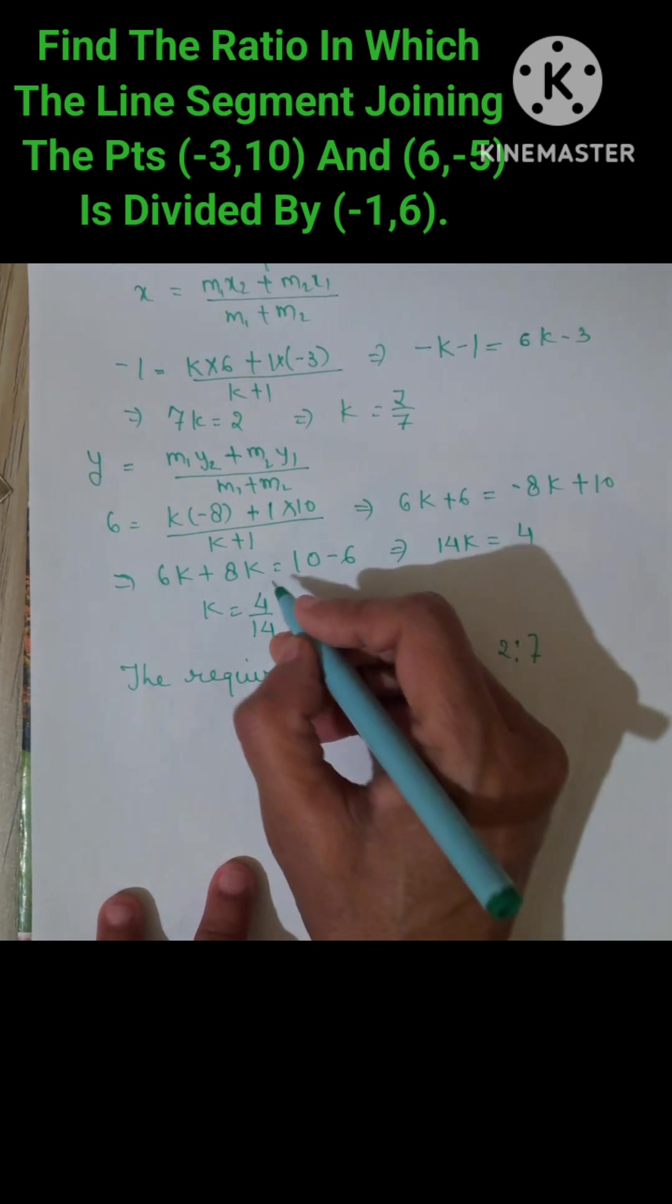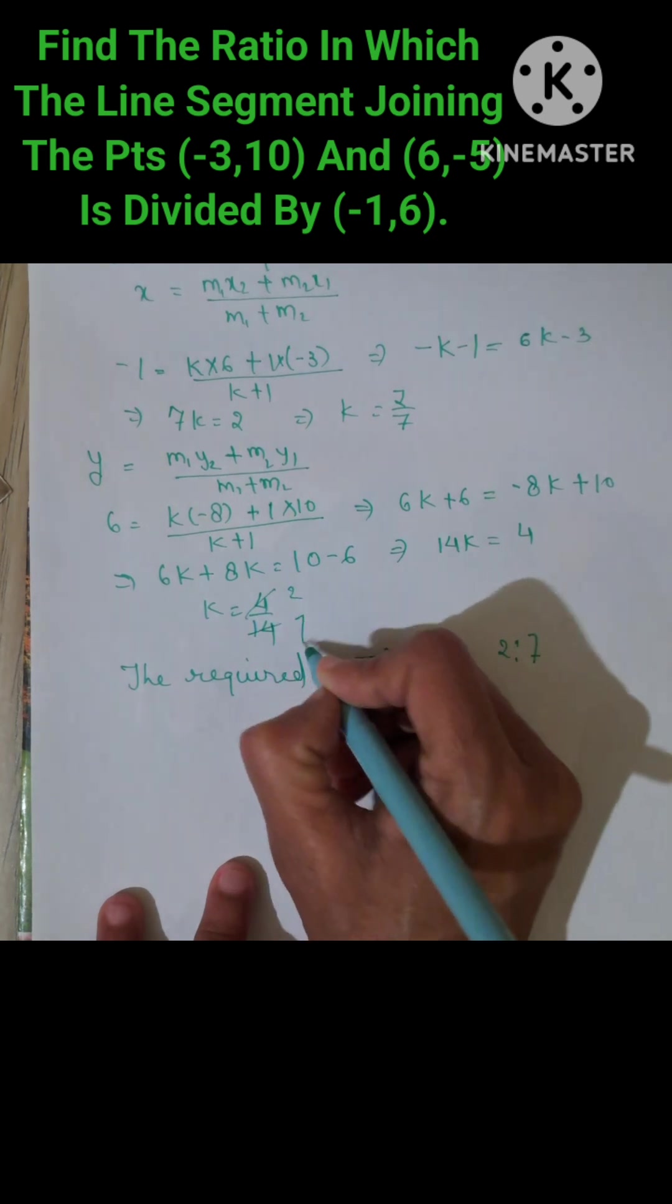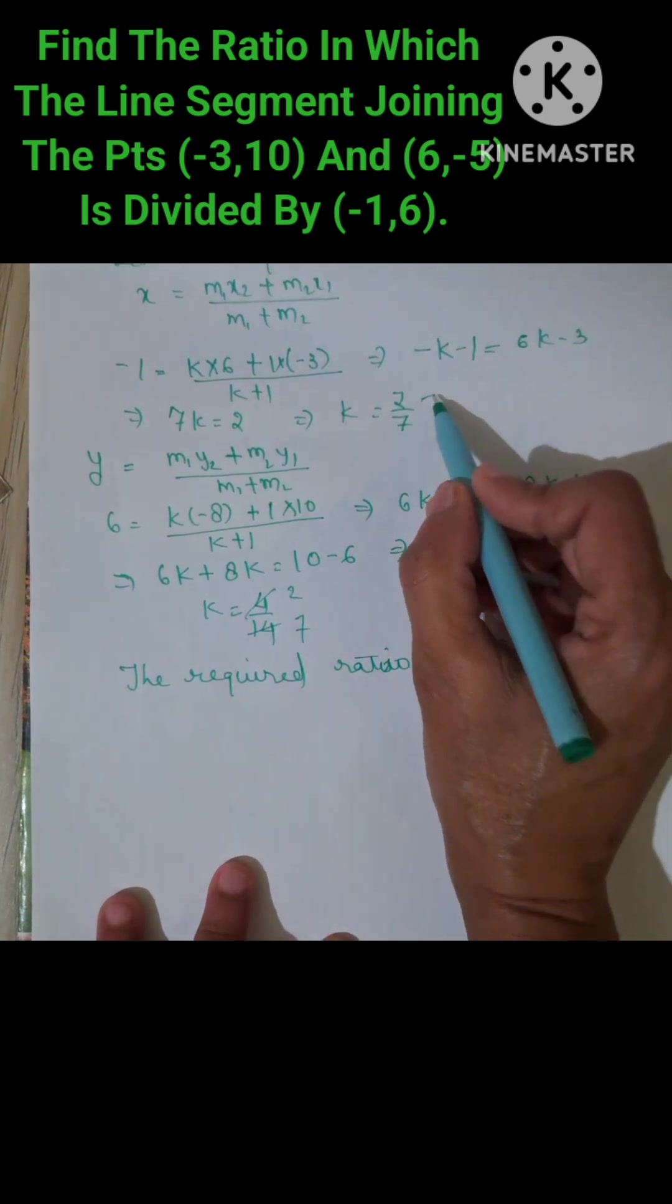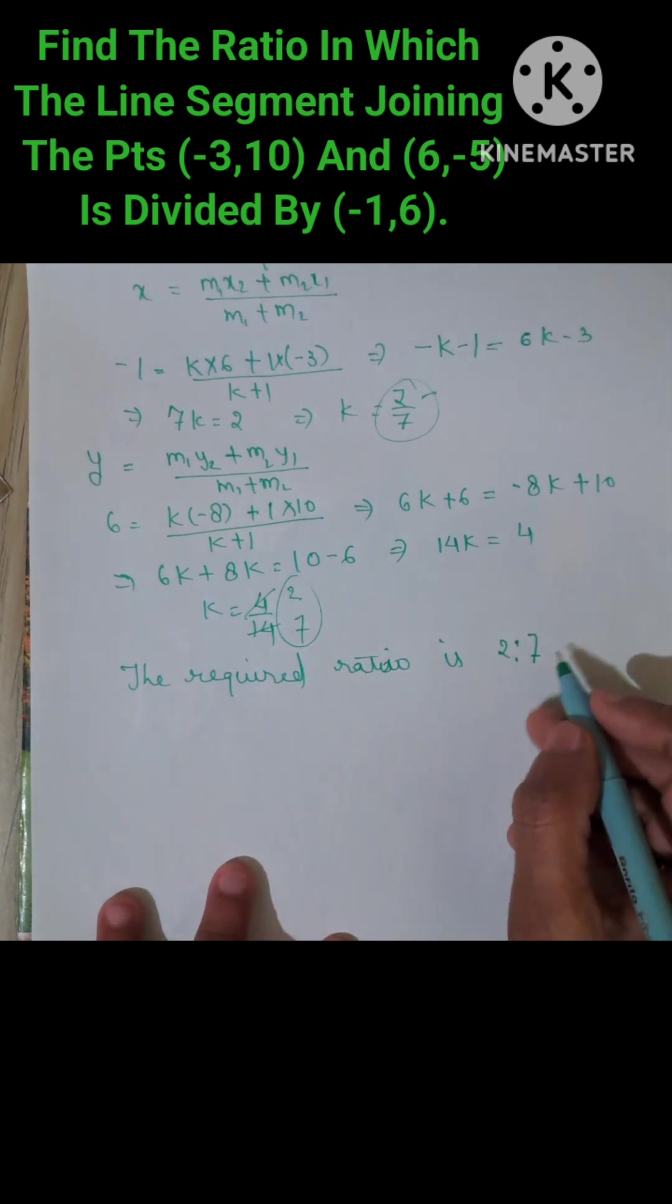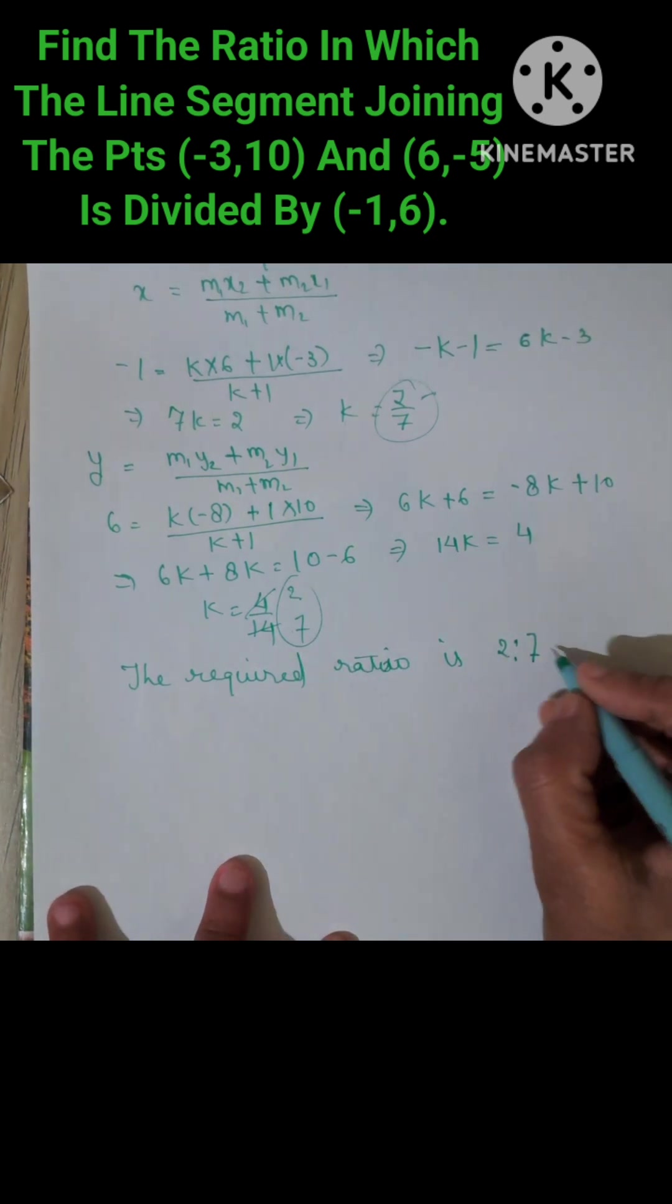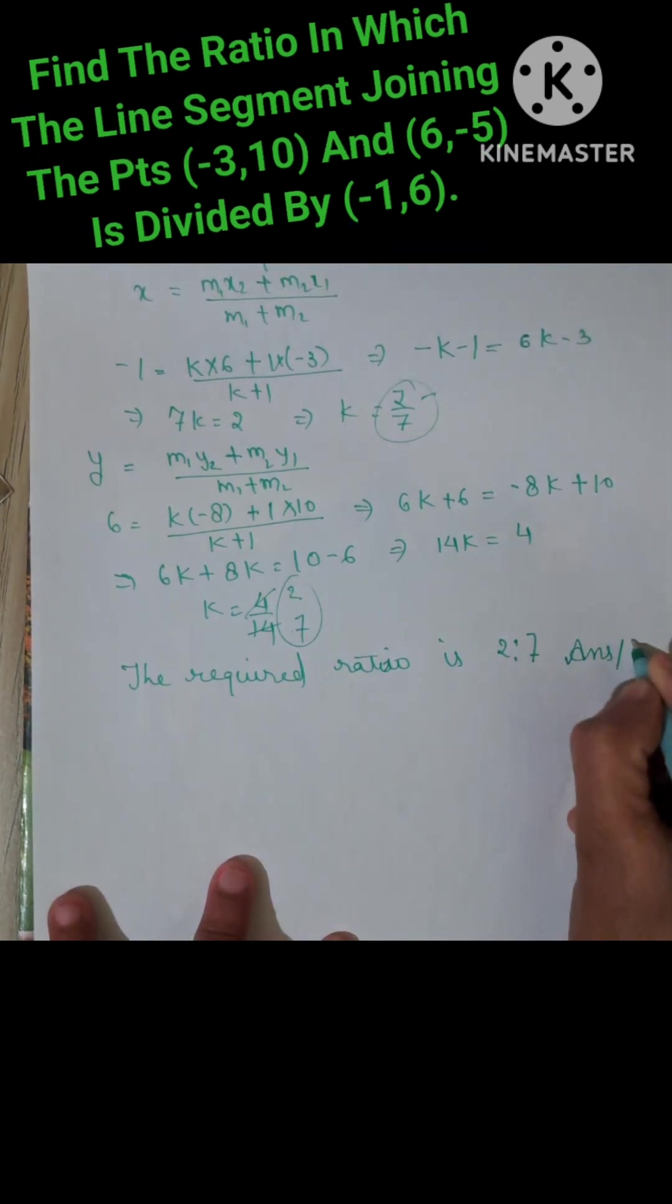We get K equals 2/7 from both the x-coordinate and y-coordinate equations. Therefore, the required answer is 2:7. That is our answer.